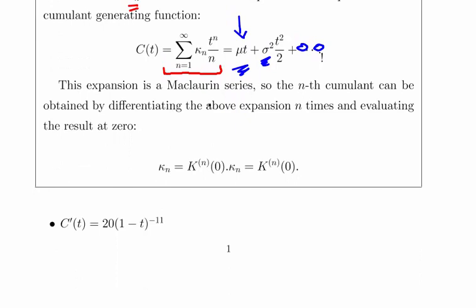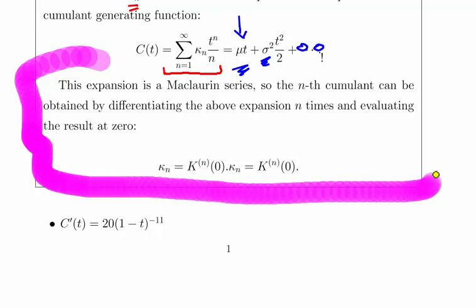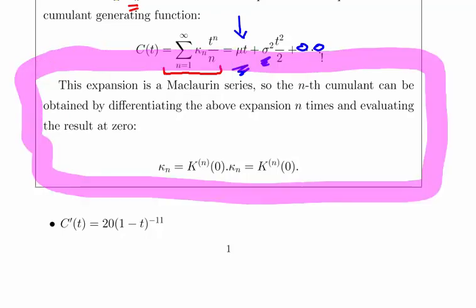The expansion is a McLaurin series. The nth cumulant can be obtained by differentiating the above expansion n times and evaluating the result at 0. That's a key definition here. Sorry, I just realized I'm skipping notation. I've used C above and I'm using K here. It's not such a big deal, but I'd just be consistent.